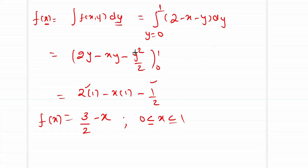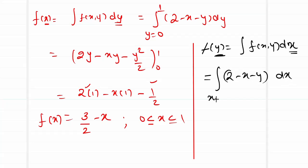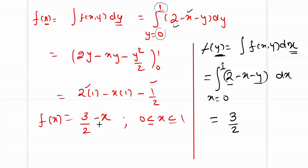Now we estimate f(y). f(y) is the integral of f(x,y) with respect to x, since y means we integrate with respect to variable x. This is the integral from 0 to 1 of (2 - x - y) dx. We can observe a symmetric pattern: here 2 is a constant and y is a constant, x is the only variable, with limits 0 to 1, so this evaluates to the same quantity: f(y) = 3/2 - y, valid for 0 < y < 1.